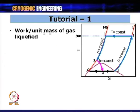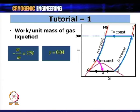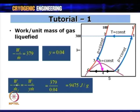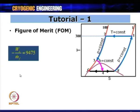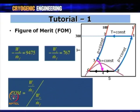Work per unit mass of gas liquefied: −WC/m_dot_f = (−WC/m_dot)/y = 379/0.04 = 9475 J/g. Figure of merit FOM = W_i/(WC/m_dot_f) = 767/9475 = 0.081 for the simple Linde-Hampson cycle.